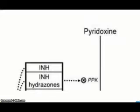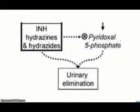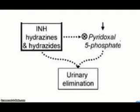In addition, INH reacts with pyridoxal phosphate to produce an inactive hydrazone complex that is renally excreted. Urinary excretion of pyridoxine and its metabolites increases with increasing INH dosage, reflecting the effect of INH on pyridoxine metabolism. The consequences of pyridoxine depletion include impaired activity of pyridoxine-dependent enzyme systems, as well as decreased catecholamine synthesis.